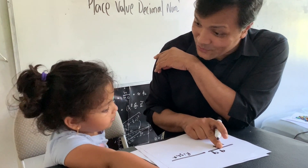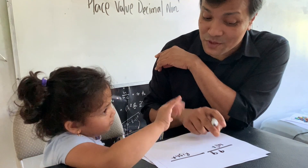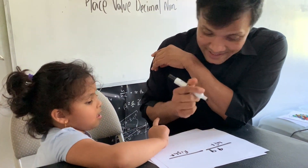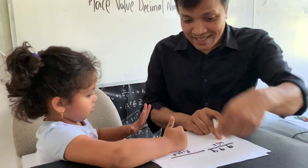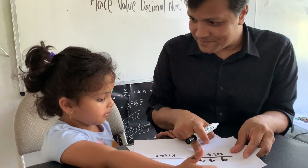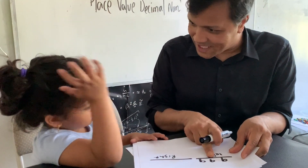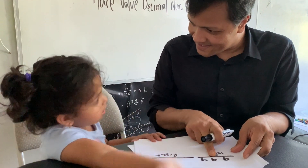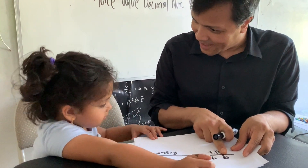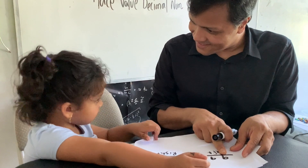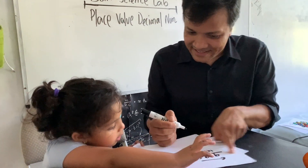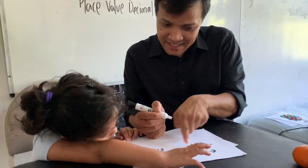How many groups of ten do we have? Nine. And how many groups of one do we have? Nine. Now how can you read it? Look — how many groups of one, how many groups of ten — nine — and how many groups of hundred do we have?